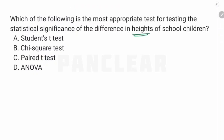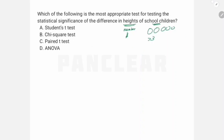What is the most appropriate test for testing the difference in heights of school children across different classes? We compare the average height across multiple groups (standards/classes) within one school. This is nothing but the Analysis of Variance test — ANOVA — which is a type of parametric test.